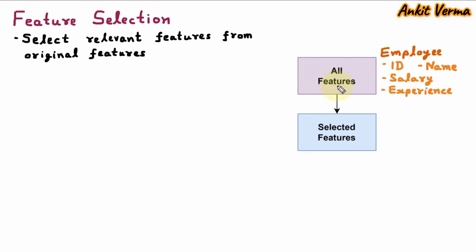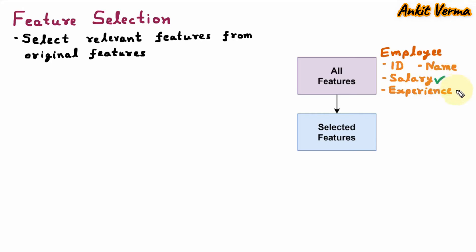So these are all the features available with the employee dataset. Now let us suppose that the HR department of a company wants to create an algorithm in which they want to increase the salary of all the employees based on their experience. To train the model, they need some features. Here, salary is the important feature and experience is the important feature.